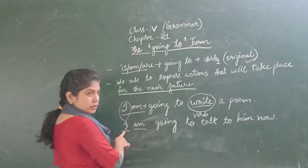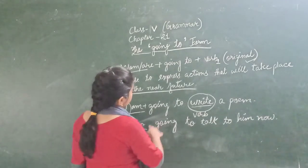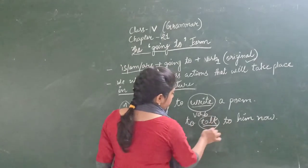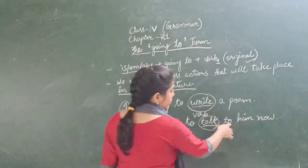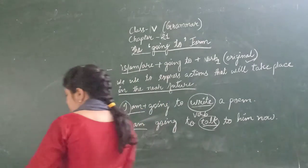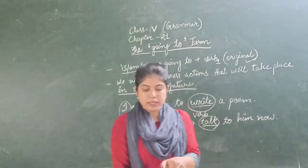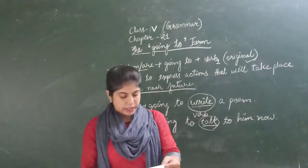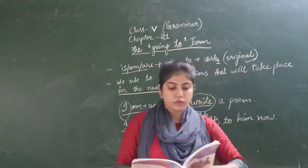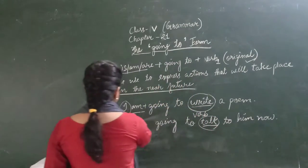With the subject I, we use am, then going to, and talk — which is the verb here, the original form of the verb — to him now. Now some more examples according to the book. Exercise given on page number 88: fill in the blanks with the going to form of the verbs given in brackets.